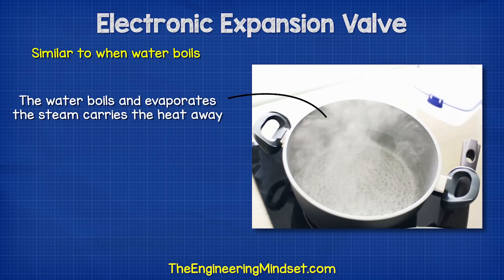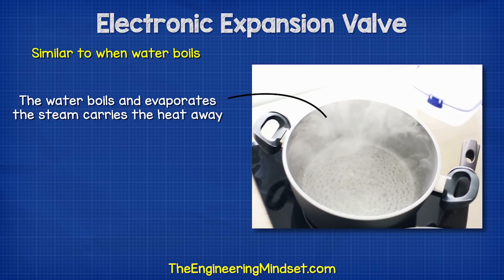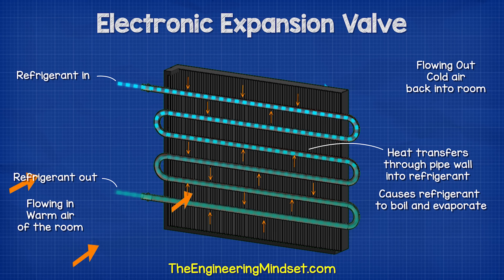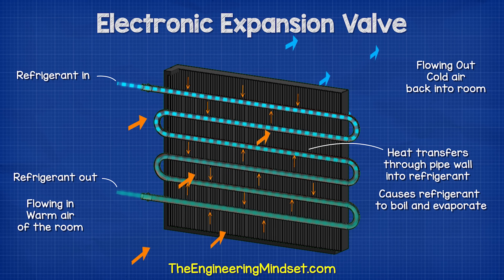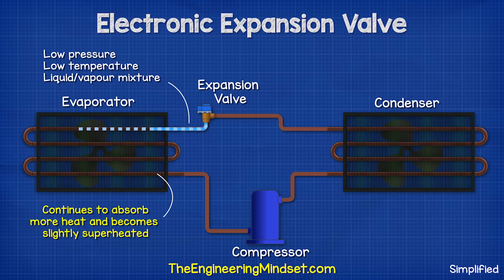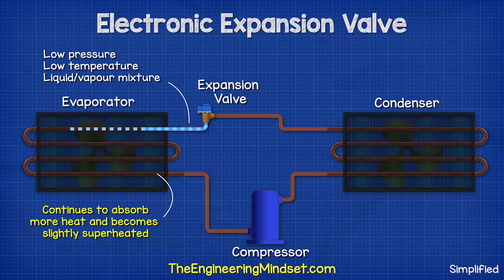As the refrigerant evaporates it carries away the heat. It's similar to when we boil water — the water heats up, it evaporates and turns into steam, and carries this heat away. So the air on the outside is entering hot and it's leaving cold. The refrigerant continues to travel through the evaporator picking up more heat which boils it further until it becomes slightly superheated.